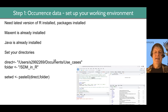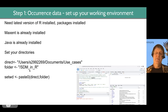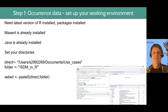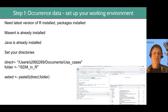If you type in getwd() you'll get the directory you're currently working in. When you do that in EcoCommons, it'll be a somewhat unusual directory path. But if you copy and paste that directory and give it a name — we're going to call it 'direct' in quotes — that'll be your base directory. Then you'll make a new folder and give it a name, put a backslash in front of it, and that gets appended to the base directory.